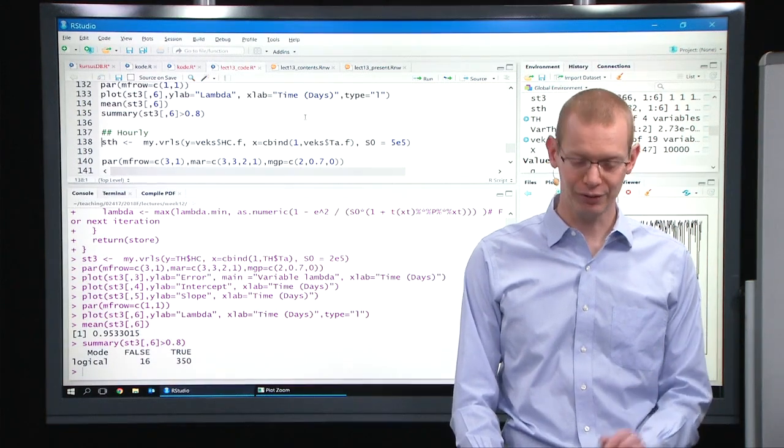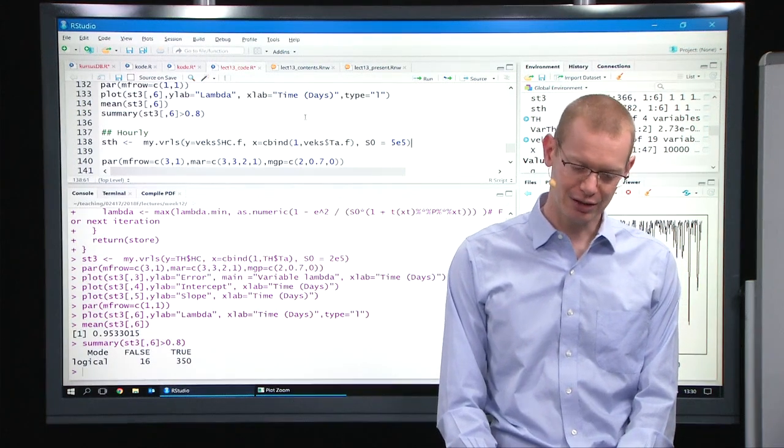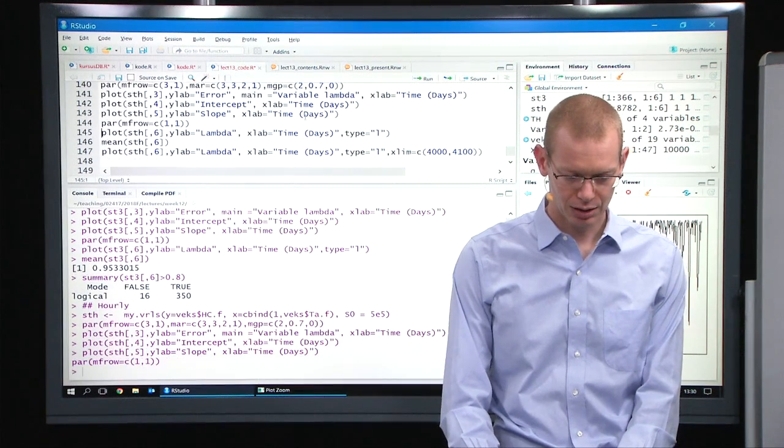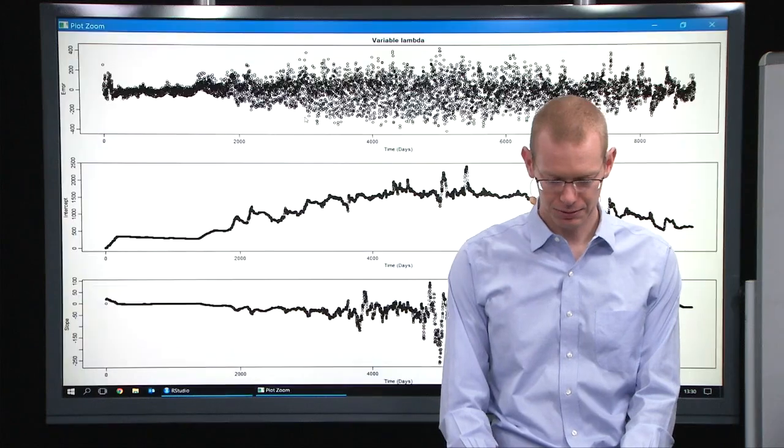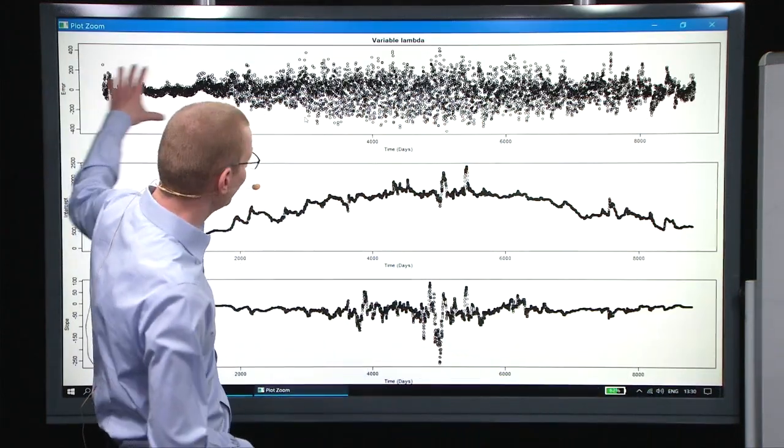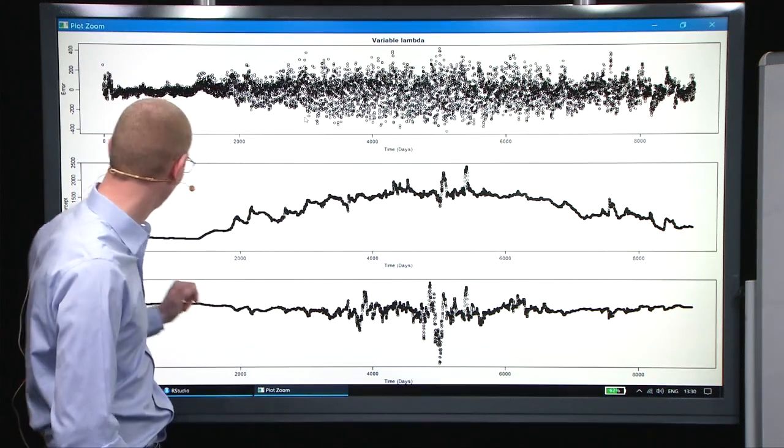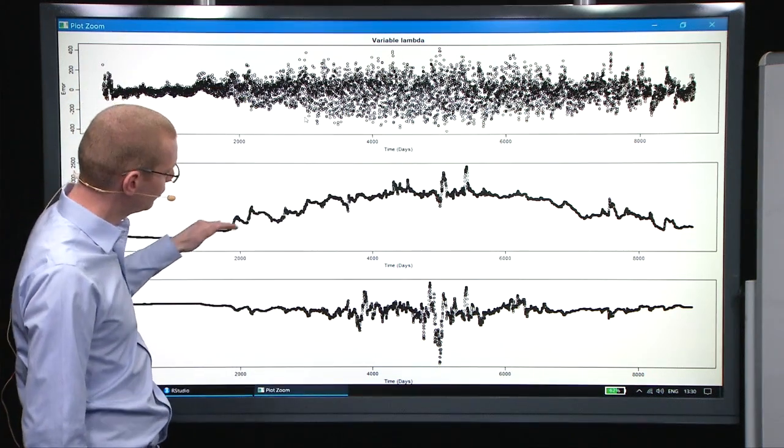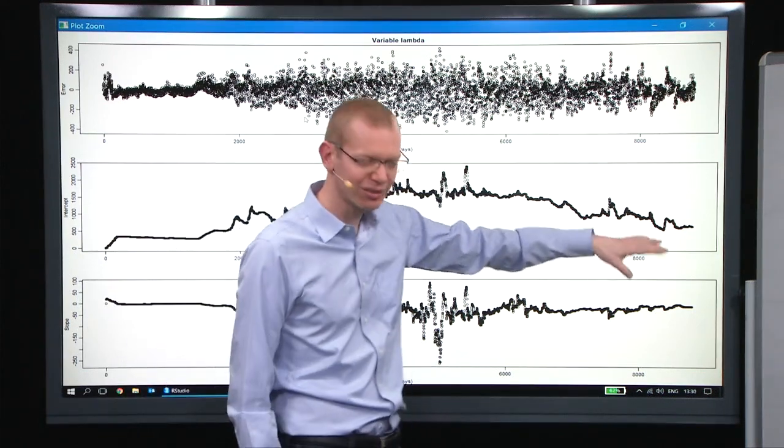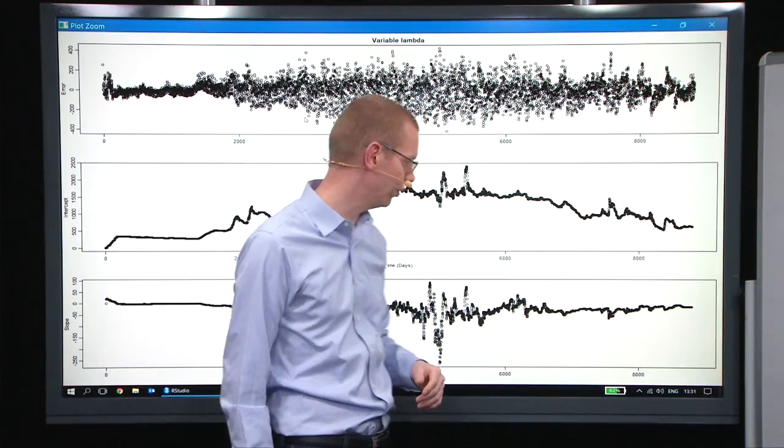If we do the same thing on the hourly data, change the objective a little bit, and plot it, then you can say the errors up here is, again, of course, should be a cloud, and it barely is. The intercept here is changing over time. We still have some things here. It's not at all as noisy as it was before.